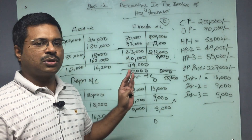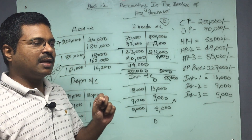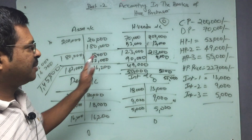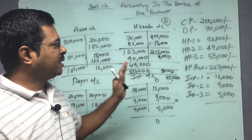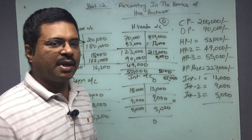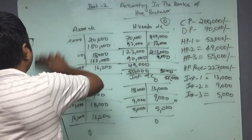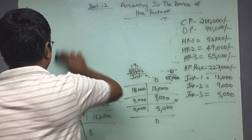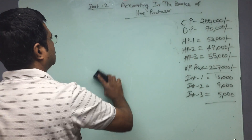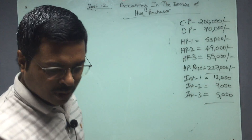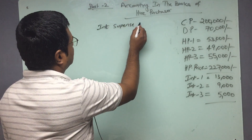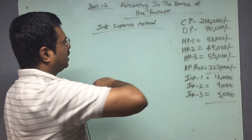There is another method called the interest suspense method. In the interest suspense method, the rest of the entries remain the same — only the interest will be recorded at gross at the beginning of the first year itself. Let's understand that particular aspect; the rest remains the same.